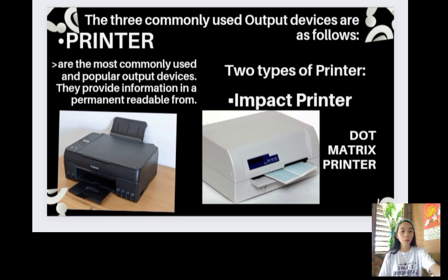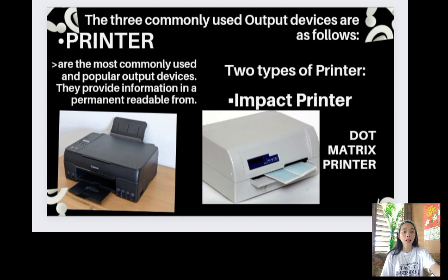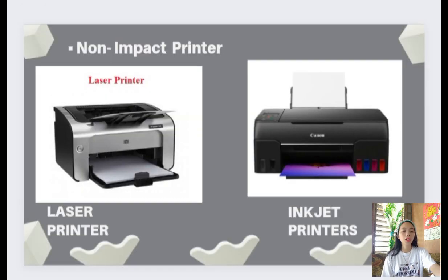We have two types of printers: the impact printer and the non-impact printer. The impact printer uses an electro-mechanical mechanism; its printing head touches the paper, using hammers or pins to strike against a ribbon and paper to print text or an image. An example is the dot matrix printer. The non-impact printer uses ink and special electrical machines for producing outputs; its printing head does not touch the paper, forming characters and images without actually striking the paper. Examples include the laser printer and inkjet printers.